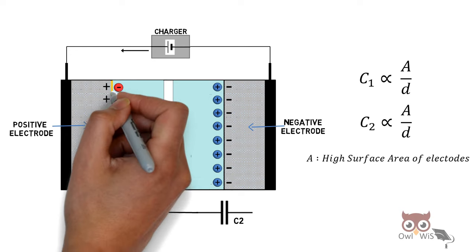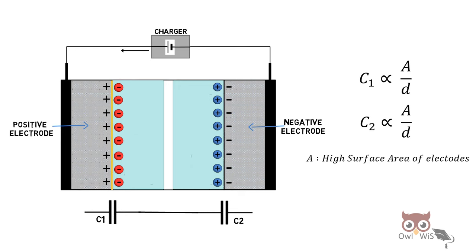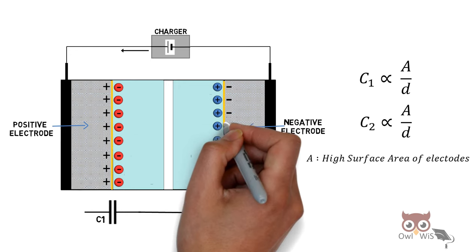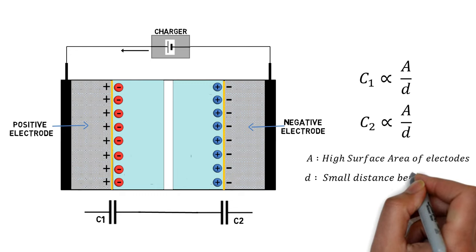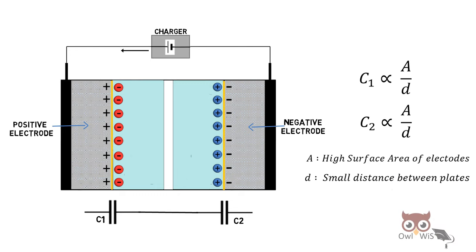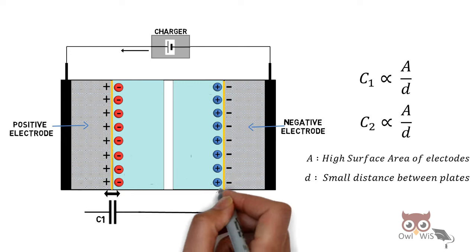A is the high surface area of the electrode. As you can see, the highlighted area is the surface area. Similarly, d is the small distance between the plates, as you can see the distance is small.